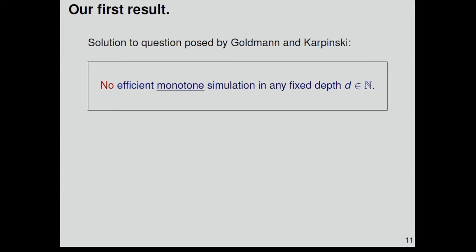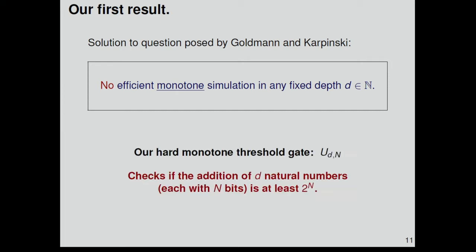Eventually, we arrived at a solution to the problem, and we showed the following. There is no efficient monotone simulation in any fixed depth D. In other words, there is a single monotone threshold gate with exponential weights, but if you only want to use a constant number of monotone majorities, constant number of layers, then they need to have exponentially large weights.